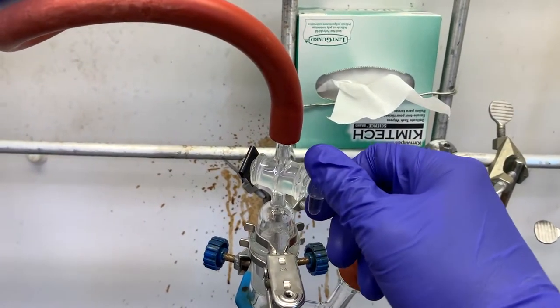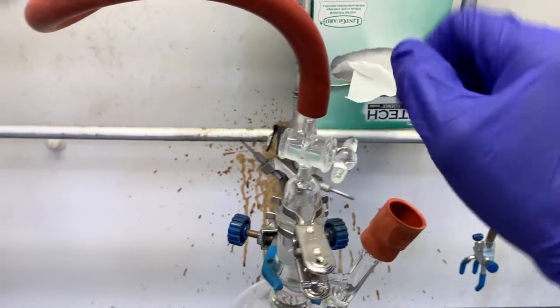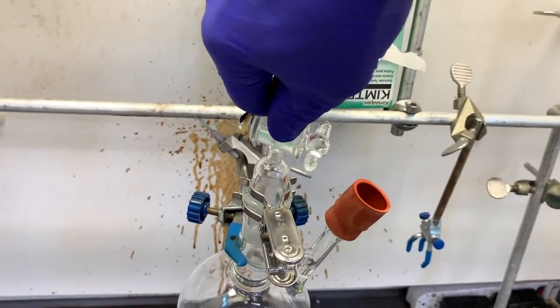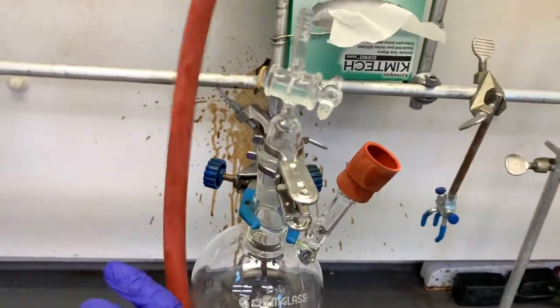Once your rubber septum is secured, close the flask at the hose barb adapter, close the tap on the Schlenk manifold, remove the hose from the flask, and stash the flask in a chemical carrier and bring it over to the solvent still room.